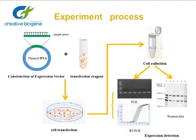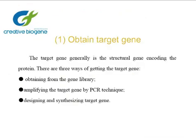The experiment process is as follows. Step one: obtain the target gene. The target gene is generally the structural gene encoding the protein. There are three ways of getting the target gene: obtaining from the gene library, amplifying the target gene by PCR technique, and designing and synthesizing the target gene.